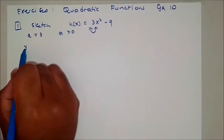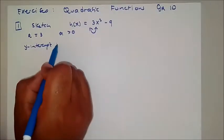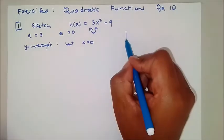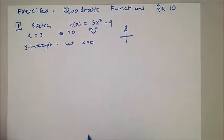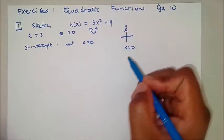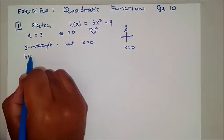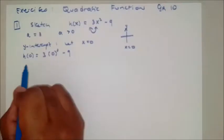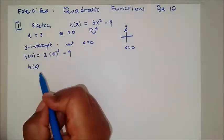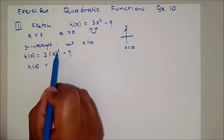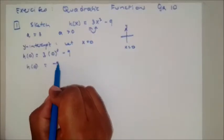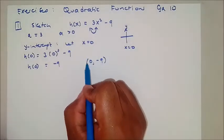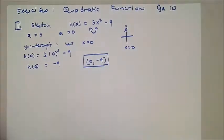Now we look at the y-intercept. For the y-intercept, we let x equal to 0, because the equation of the y-axis is x equals 0. So H of 0 equals 3 times 0 squared minus 9. That gives us 0 minus 9. So the y-intercept is (0, -9).